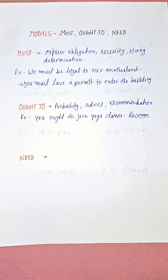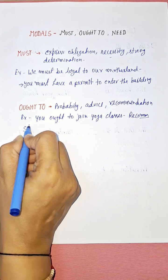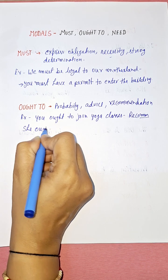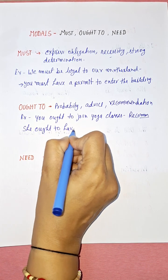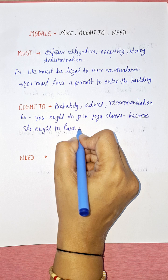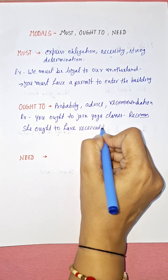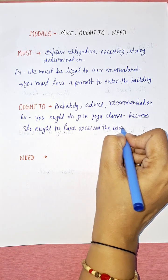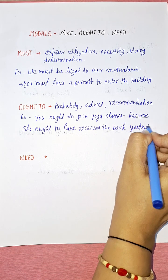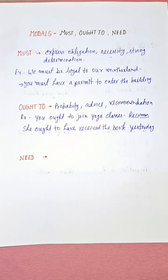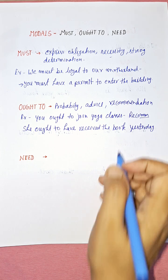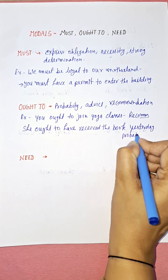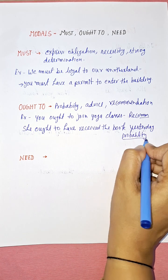Another example: 'You ought to have received the book yesterday.' Or: 'She ought to have received the book yesterday.' Here, probability is being shown — the probability that you could have received the book yesterday.